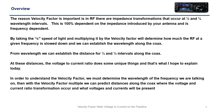Essentially what we do is take the speed of light — lowercase c — and multiply it by the velocity factor. This determines how much the RF at a given frequency is slowed down on the coax, and from this we can establish the wavelength. From the wavelength we can establish the distance for quarter and half wave intervals along the coax, and at these distances the voltage-to-current ratio does some unique things. To understand velocity factor, we determine the wavelength of the frequency we're operating on, then use the velocity factor to predict distances along the coax where voltage and current ratio transformations occur.